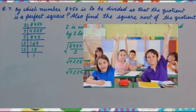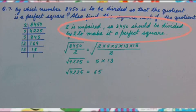How can we remove it? By dividing by 2. So 8450 should be divided by 2 to make it a perfect square.